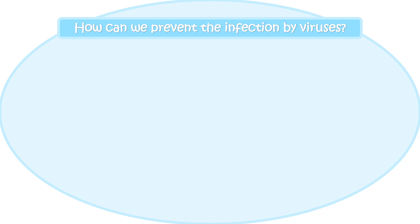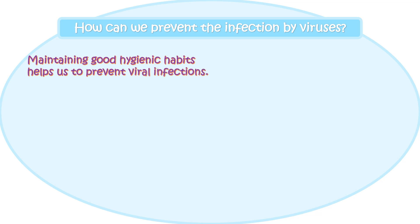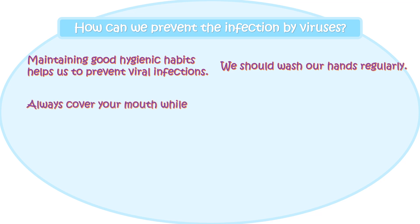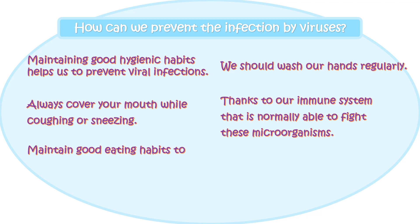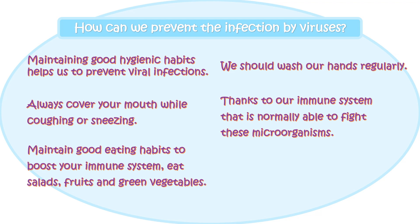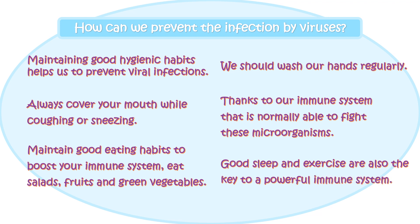How can we prevent infection by viruses? Maintaining good hygienic habits helps us to prevent viral infections. We should wash our hands regularly and always cover your mouth while coughing or sneezing. Thanks to our immune system, which is normally able to fight these microorganisms. Maintain good eating habits to boost your immune system — eat salads, fruits, and green vegetables. Good sleep and exercise are also key to a powerful immune system.